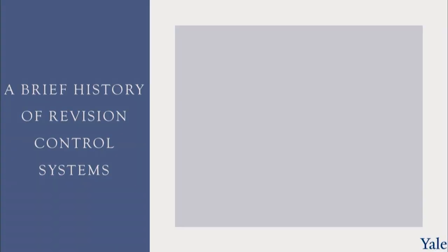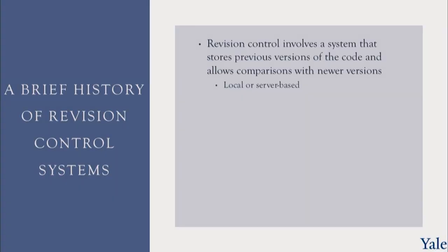Let's give you a brief history of revision control systems. Revision control systems involve a system that stores previous versions of the code and allows comparisons with newer versions. This involves undo, seeing what's changed, and all those good things. They can be local, living on your local file system, or they can be server-based.